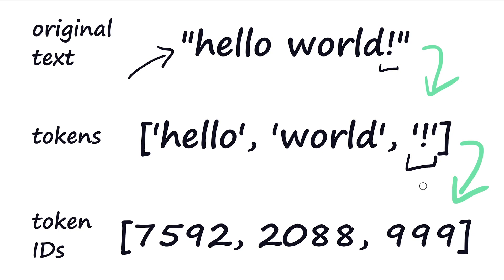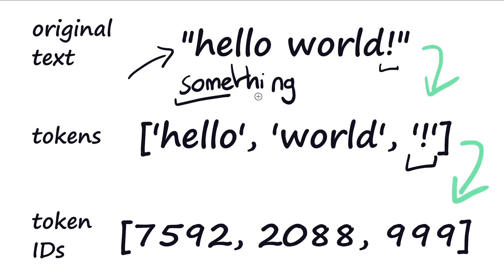Depending on what sort of tokenizer you're using, you can build tokens from completely different things. You can build tokenizers from the bytes within the text, or you can do word piece encoding. For example, the word 'something' could be split into three word pieces: 'some', 'thing', and 'ing'. So tokenization doesn't have to be one word per token. Then we go from those tokens to the token IDs — for example, 'hello' maps to 7592.